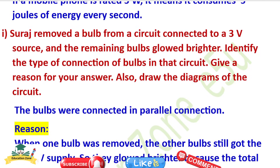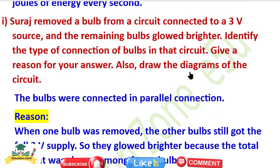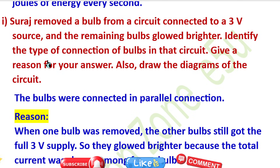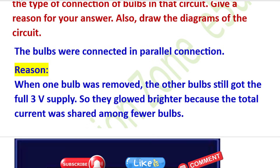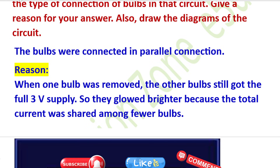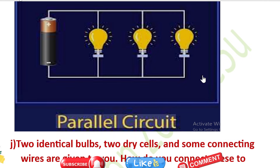Question: Suraj removed a bulb from the circuit connected to a three-volt source and the remaining bulbs glowed brighter. Identify the type of connection and give a reason. The bulbs were connected in parallel connection. When one bulb was removed, the remaining bulbs still got the three volts applied, so they glowed brighter because the total current was shared among fewer bulbs.